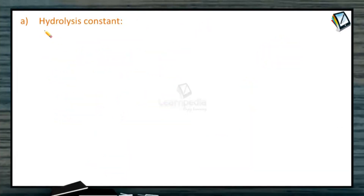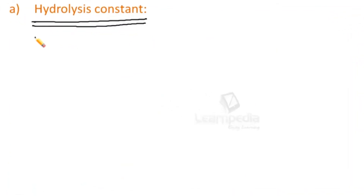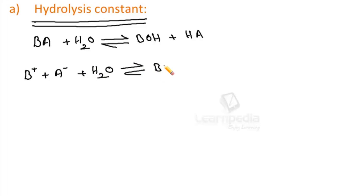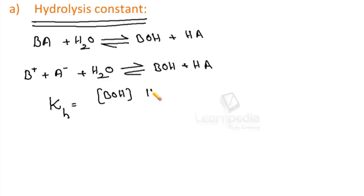Let us now calculate the hydrolysis constant for a salt formed from weak acid and weak base. Let the salt BA, from weak acid and weak base, be put in water. It reacts with water to give weak base BOH and weak acid HA. Since BA is a strong electrolyte, the equation is written as B⁺ plus A⁻ reacting with water to give BOH and HA. The hydrolysis constant KH can be written as [BOH][HA] divided by [B⁺][A⁻].